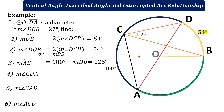Number 4: find angle CDA. Angle CDA is also an inscribed angle. Its intercepted arc is arc CA, which measures 100 degrees. An inscribed angle's measure is half the measure of its intercepted arc. Therefore, angle CDA equals 100 divided by 2, which is 50 degrees.